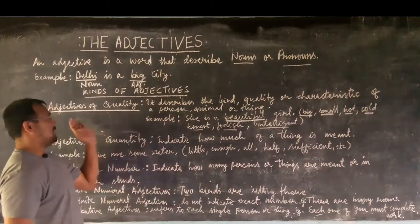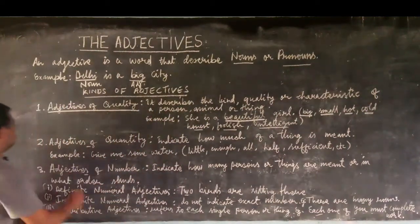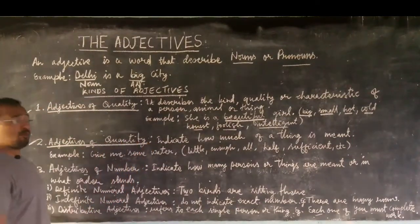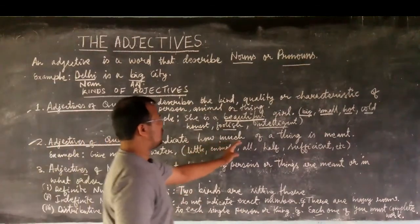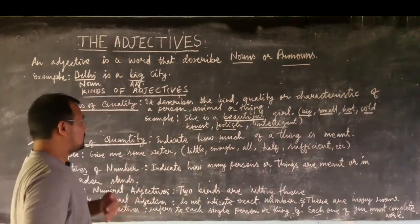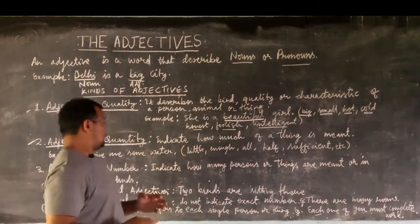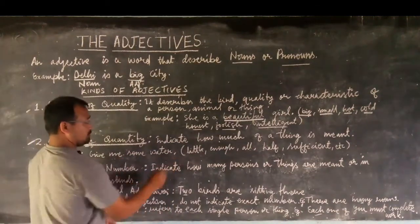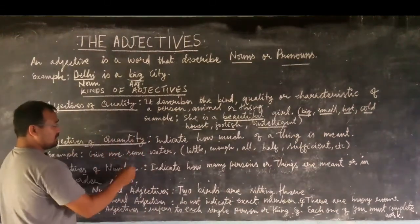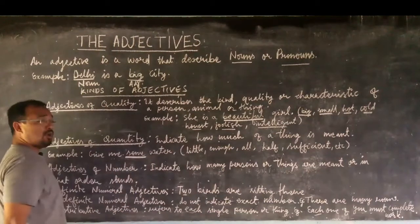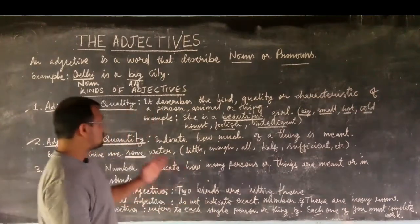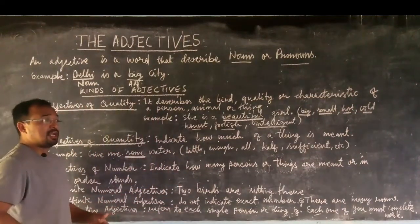The second type is the adjective of quantity. It indicates how much of a thing is meant — answering the question 'how much.' For example, 'Give me some water.' Here, the word 'some' is indicating the quantity of water — how much water is needed. It could be a glass, a jug, or a bucket of water.